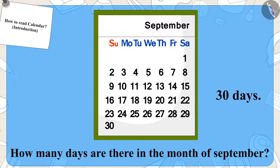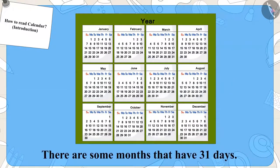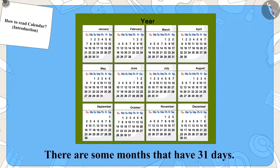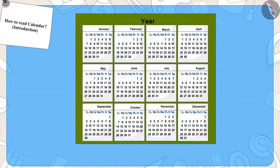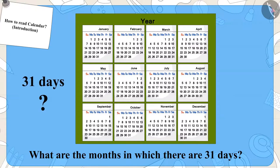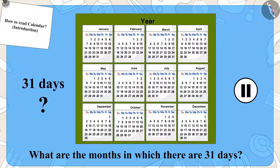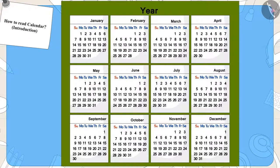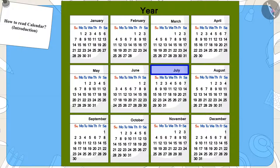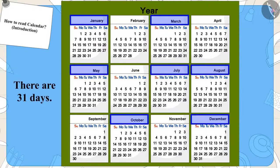Children, do you know that there are not 30 days in all months? There are some months that have 31 days. Can you tell by looking at the calendar which months have 31 days? If you want, you can pause the video to find the answer. January, March, May, July, August, October, and December have 31 days.